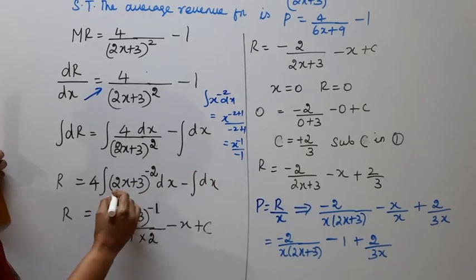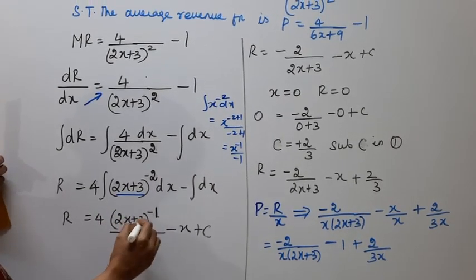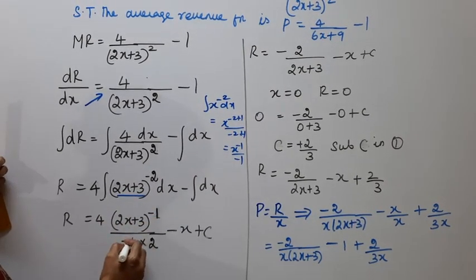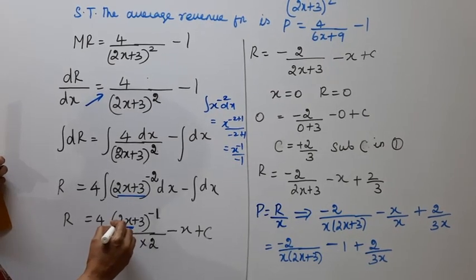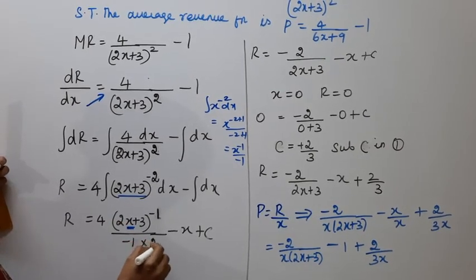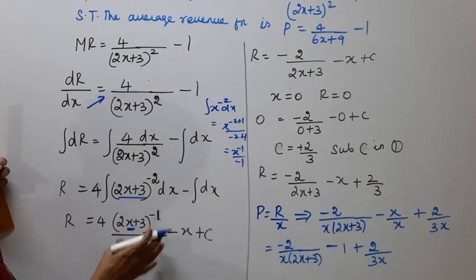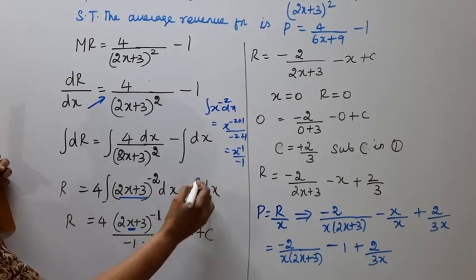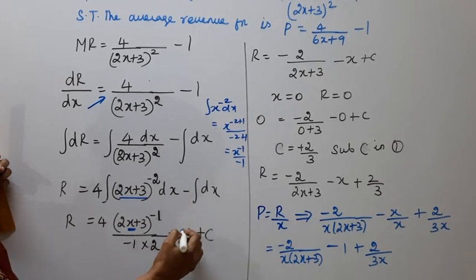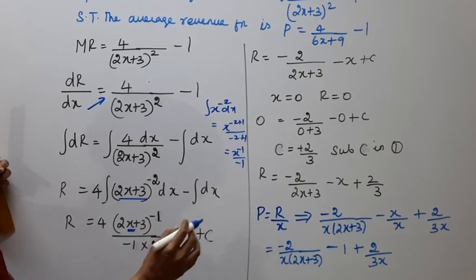That is 4 times (2x+3)^-1 by -1. For x, we have 2x+3, so times the coefficient 2. Then integrate 1 dx to get minus x plus C.